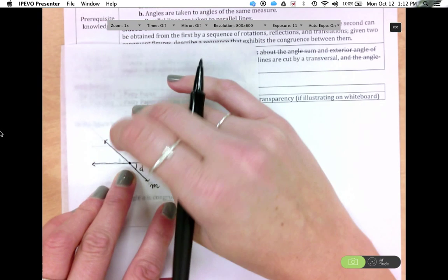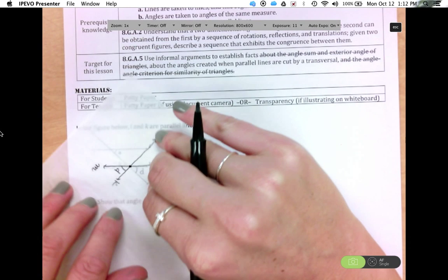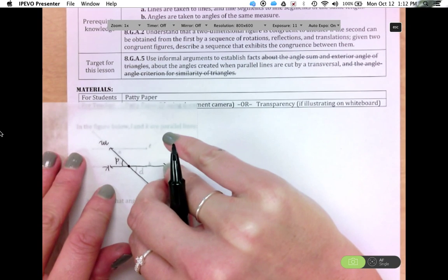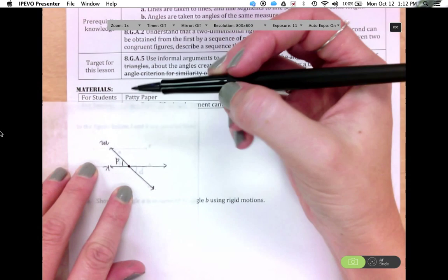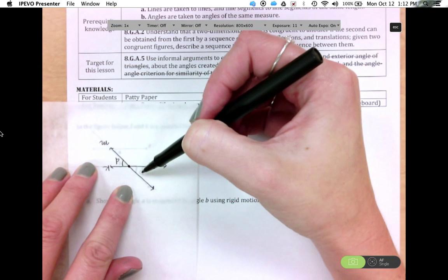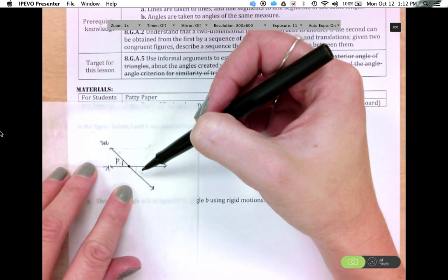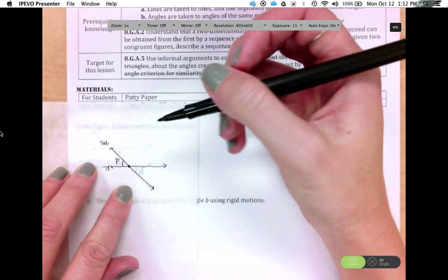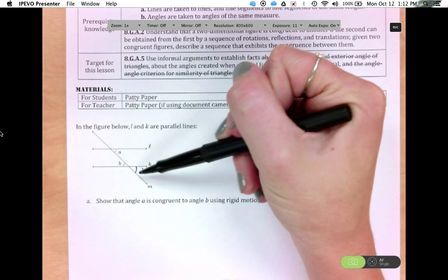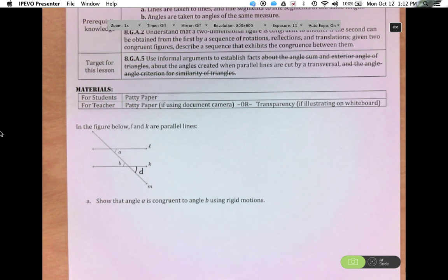And so we have our D, and we can see that B is up here. And so we can say then that we can rotate 180 degrees about the intersection of K and M, so this point here. And if we rotate it 180 degrees, then we can see that this angle D was mapped to B, and the angle B was mapped to D. And because of this mapping, then we know that those two angles are congruent. And so if we know that A is congruent to D and D is congruent to B, then we know that A is congruent to B.